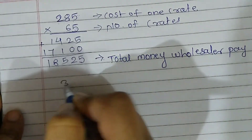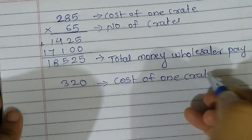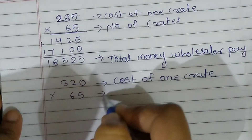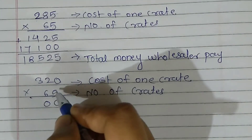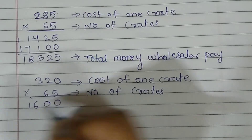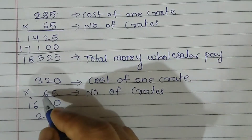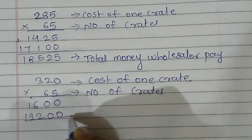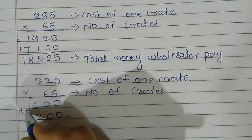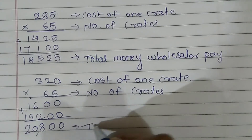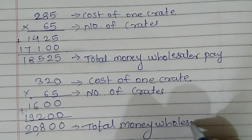Now we have to find the money he receives. Here 320 is the cost of one crate and 65 is the number of crates — same multiplication. 5 into 0 is 0, 5 twos are 10 carry 1, 5 threes are 15 plus 1 is 16. Put 0, then 6 into 0 is 0, 6 twos are 12 carry 1, 6 threes are 18 plus 1 is 19. Adding: 0 plus 0 is 0, 0 plus 6 plus 2 is 8, 9 plus 1 is 10, carry 1, and 2. So the result is 20,800 — total money the wholesaler receives.